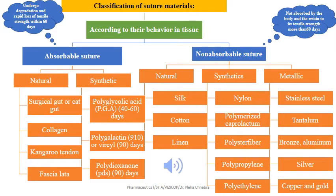Sutures can be categorized on the basis of three different things. One is their behavior in tissue — whether they are absorbable or non-absorbable. The second way is based on their structure, that is monofilament or multifilament. The third way is to categorize according to their origin — whether of natural, synthetic, or metallic origin. The sutures may be divided into two principal classes: absorbable and non-absorbable.